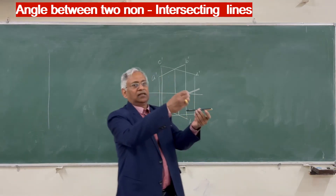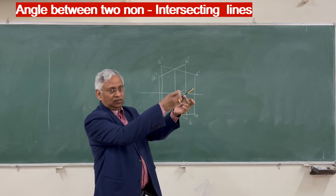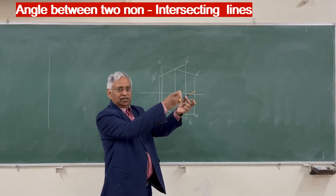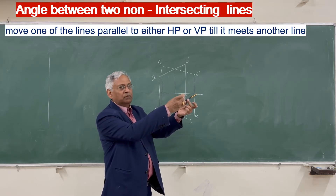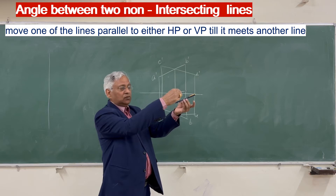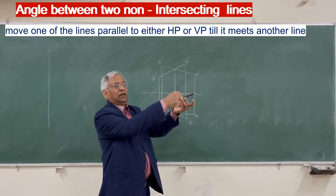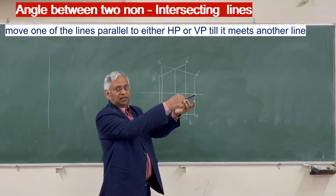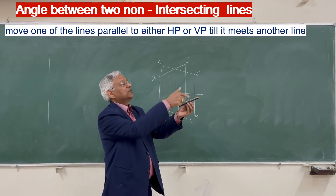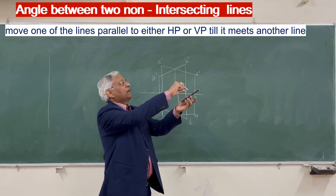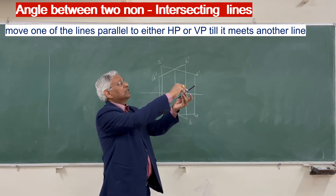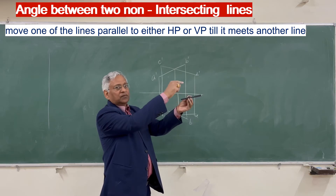We have two non-parallel, non-intersecting lines. To make them intersecting, either you move AB or you move CD parallel to the horizontal plane or parallel to the vertical plane until they intersect. Let us say we move line AB parallel to the vertical plane — we bring it down so that it becomes intersecting with CD. We reduce the height of A and B so they intersect with CD. You can also move the line parallel to the vertical plane, so that the distance from the vertical plane does not change.